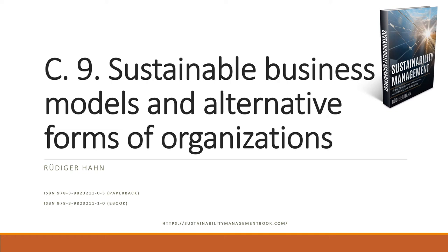Welcome to chapter C9 of the textbook on sustainability management. This chapter is about sustainable business models and alternative forms of organizations. With this chapter we approach the bigger questions of sustainability management. When we're talking about sustainable business models, we look at how companies can be more sustainable from the very core — from the business models, the products they offer, and the way they offer them.